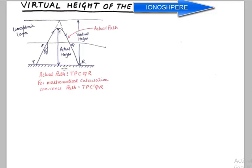The actual path will be TPCQR, and this is by the way C'. It is a gradual change, so this is known as the actual height. For mathematical convenience, we take this TPCQR to be the virtual height of the transmission. You can make a note that virtual height will always be greater than the actual height of the skywave propagating signal.